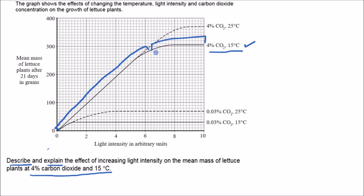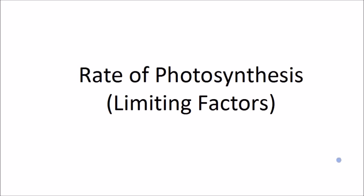To recap: in the first section, light intensity increases and mean mass increases because light intensity is the limiting factor. Beyond six to seven arbitrary units, increasing light intensity does not increase mean mass because something else is limiting the rate of reaction — either carbon dioxide or temperature is the limiting factor. I hope that video was helpful. Any suggestions or comments, leave them below, make sure you like and subscribe, and I'll see you in the next video.